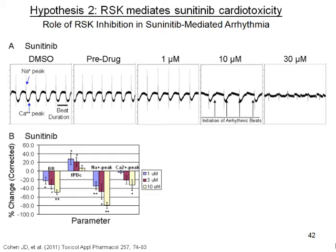Using the microelectrode array — here is the sodium peak and here is the calcium peak, and from top to top is the equivalent of QT — in a 10-second trace these cells are beating synchronously. At around 10 micromolar, we see the initiation of arrhythmic beats, and by 30 micromolar there's a decrease in the electrophysiology altogether: decreases in the sodium peak, the calcium peak, decreases in beat rate, as well as the field potential duration, which is a measurement of QT normalized to beat rate.